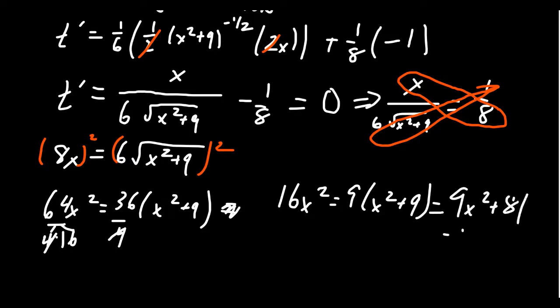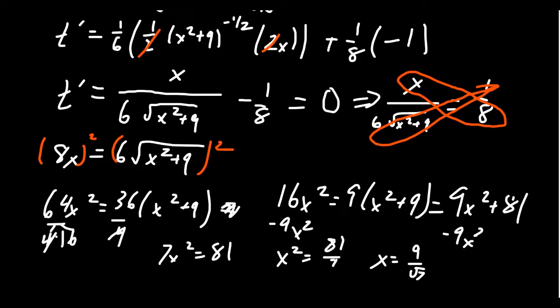If you subtract 9x squared from both sides, you're going to get 7x squared equals 81. That is, x squared equals 81 over 7. If you take the square root, you're going to get 9 over the square root of 7. This is our critical number.